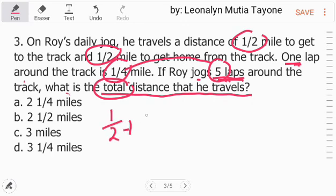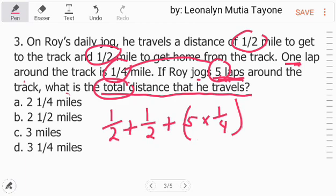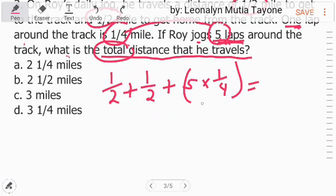I-add lang natin lahat siya. Itong 1 half and 1 half, itong si 1 fourth, yan yung i-multiply mo sa 5. So, 1 half plus 1 half plus i-add mo itong 5, 1 fourth. So, i-multiply mo siya. Unahin muna natin itong pag-multiply dito.